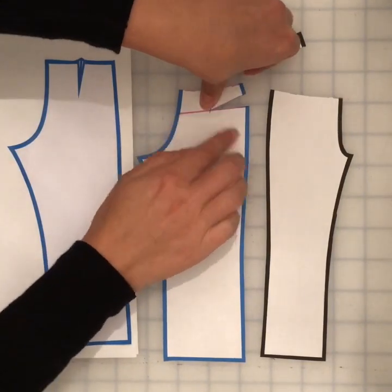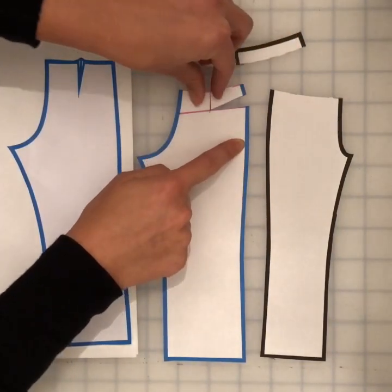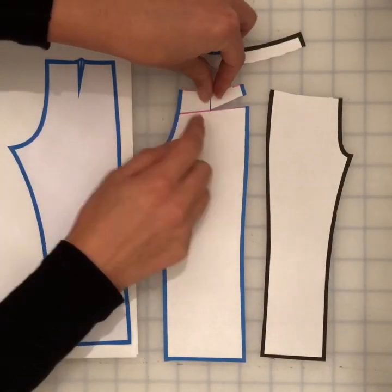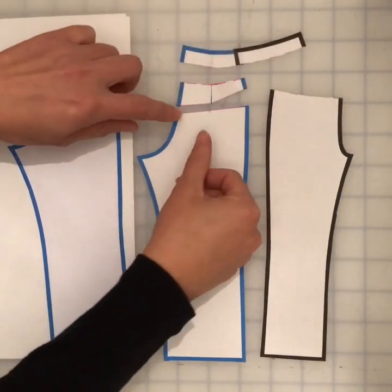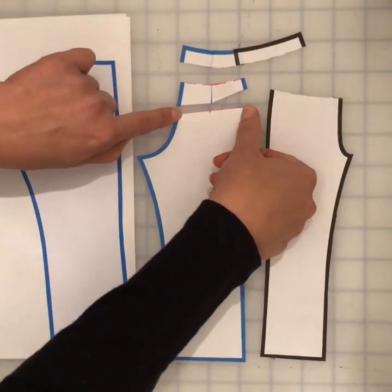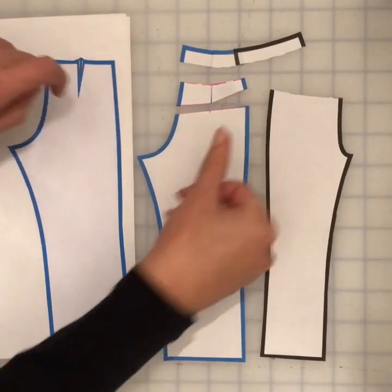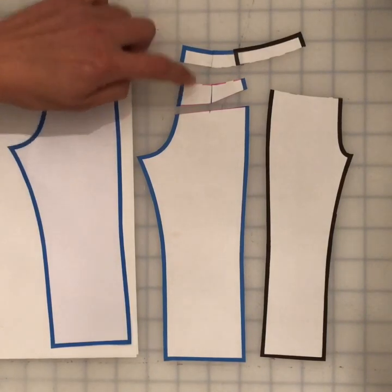We can always move the yoke position to be another design line if we want. We try to hit as close as we can to the end of the dart, and if we need to, we can always shave a little bit off for the pieces to match. But we always need to have a dart or a yoke.